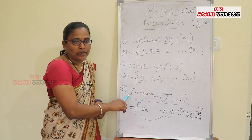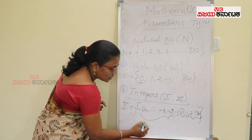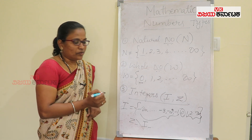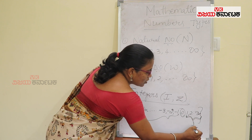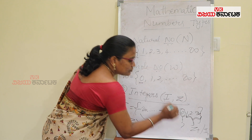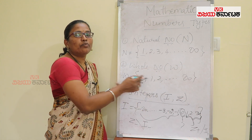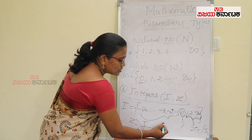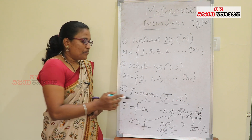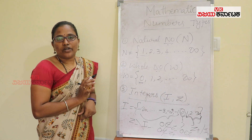All negative numbers are known as negative integers, represented as Z minus or I minus. All positive numbers are known as positive integers, represented as Z plus or I plus. Now the question arises: what about 0? Few people will say neutral — meaning neither negative nor positive. But 0 does not belong to Z minus and does not belong to Z plus. So 0 is just an integer. This is a very important point.